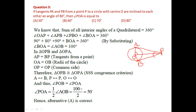First, we find the total angle AOB. Since OA and OB are perpendicular to the tangents, angles OAP and OBP are each 90°. Therefore, AOB + APB = 180°. Since APB = 80°, angle AOB = 100 degrees.